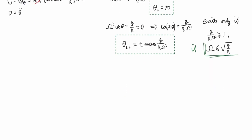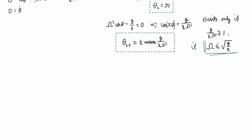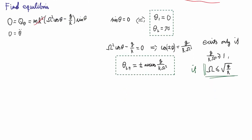Normally when working with stable or unstable equilibria, we look at the second derivative of the potential. If the second derivative is positive, the equilibrium is stable. In this case, however, we don't actually have a potential because of the forced constraint, so we're going to have to make do with our generalized force.